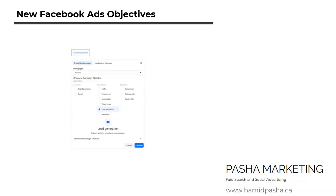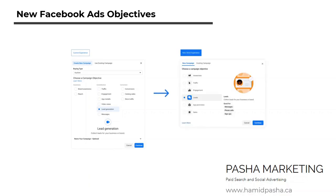Currently when you create a new campaign on Facebook Ads, the interface looks like the left image, but soon the interface will look like the right image, where there will be six campaign objectives to choose from.